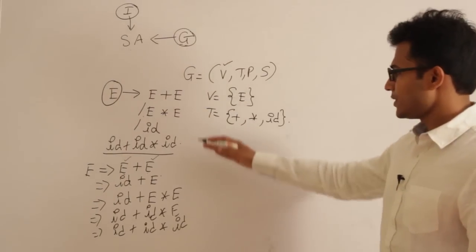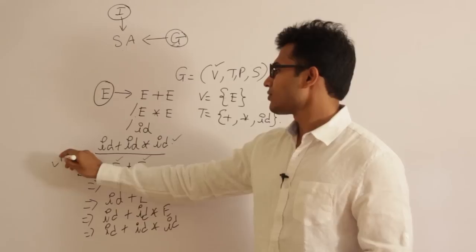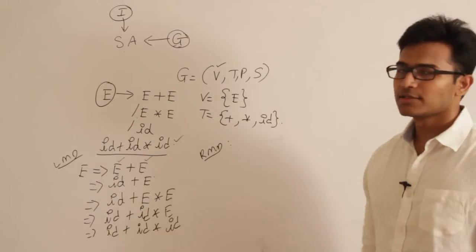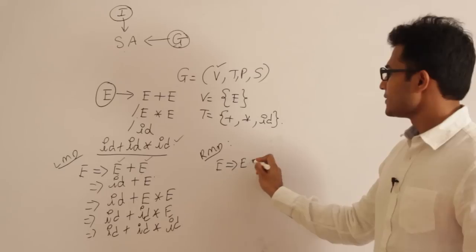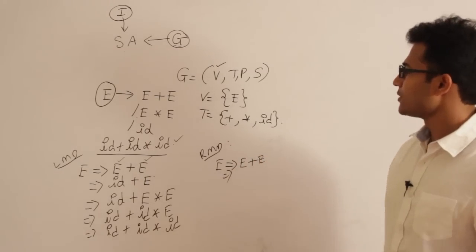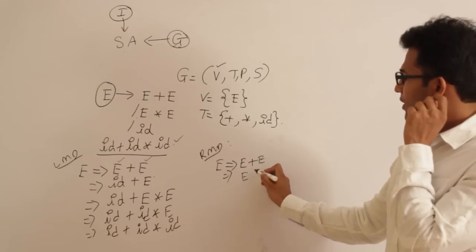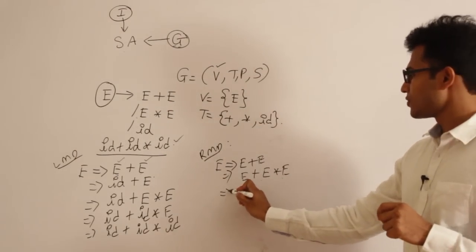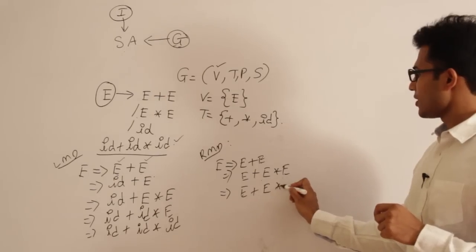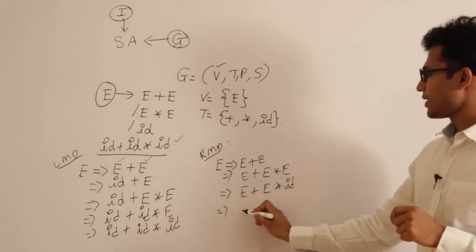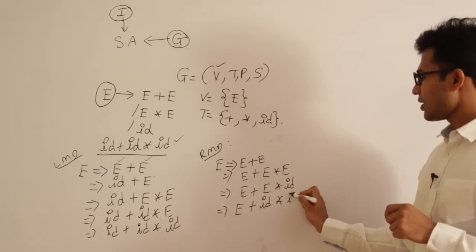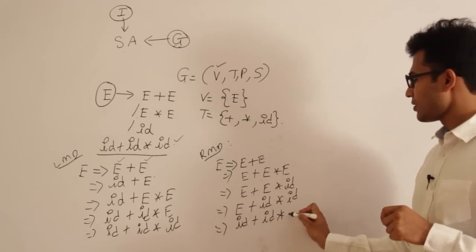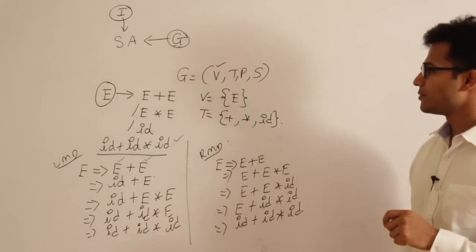Now let's do the right-most derivation (RMD) for the same string. In RMD, at every step we replace the right-most variable first. E ⇒ E + E ⇒ E + E * E ⇒ E + E * id ⇒ E + id * id ⇒ id + id * id. So both LMD and RMD produce the same string, but through different sequences of steps.